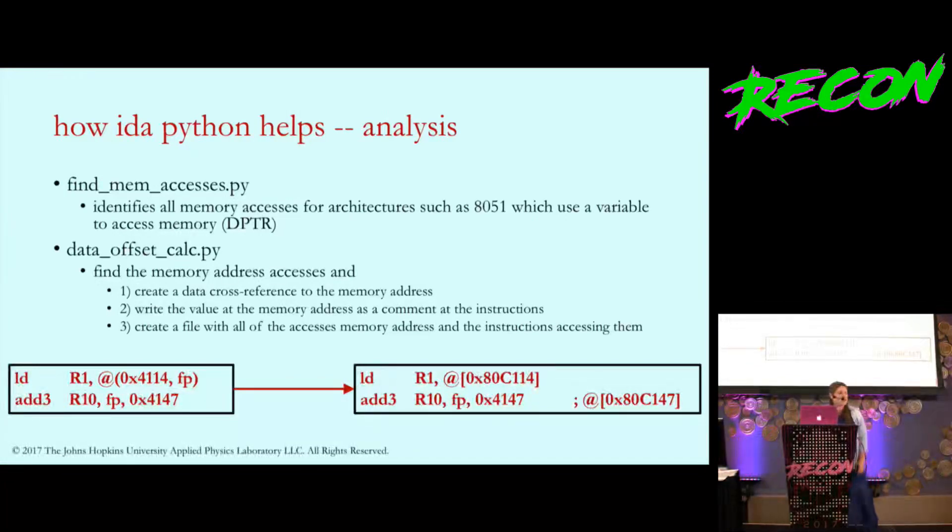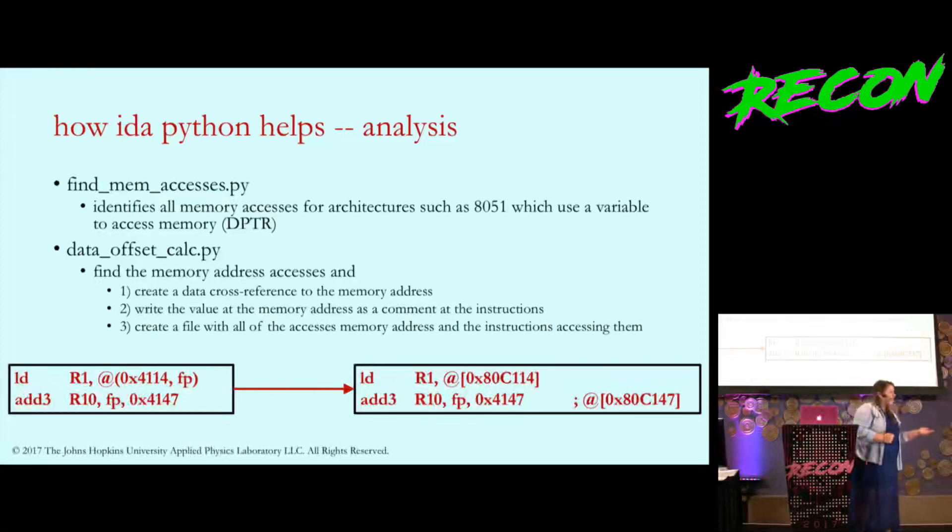The first script is find mem accesses, and it's once again as simple as it sounds. All of these are less than 50 lines of code. For architectures like 8051, they first move any memory address into a register, then that register is always used for those accesses. That means you have no data cross references. You don't see when functions are interacting with memory. This script goes through and creates data cross references for you. It can also print it out in a CSV format.